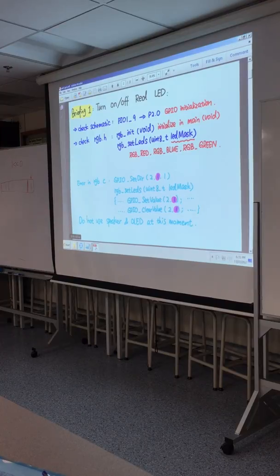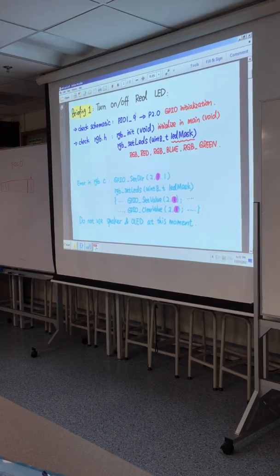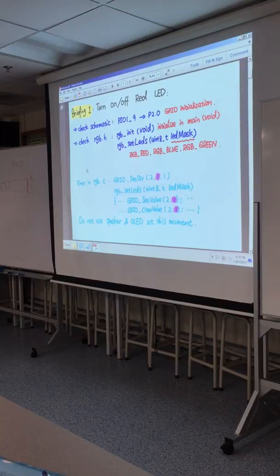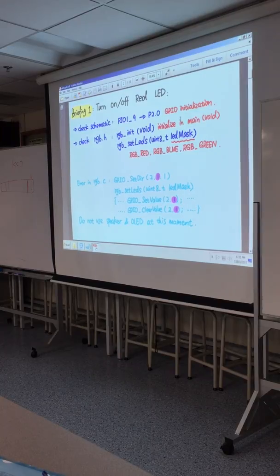Some of you still have the demo program with the speaker. When you try the RGB, you should comment out your play_song. If you check your schematic carefully, there are three pins for the RGB, and some other devices also use those same pins — some devices share the same pin. So if you try to play the song and also turn on the LED, you may have a problem. You may be controlling your LED correctly, but the speaker also takes that signal from that pin and may play a strange sound.